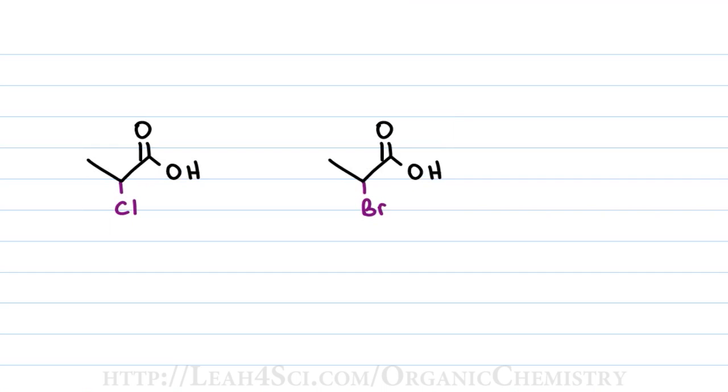Remember the halogens show up in group seven on the periodic table and you have fluorine, then chlorine, bromine and iodine. Electronegativity increases up and towards the right, in this case it increases straight up. That means fluorine is the most electronegative and then chlorine, then bromine and iodine. That means the one with the chlorine is the stronger acid and the one with the bromine is the weaker acid when you compare the two.